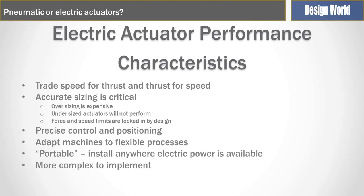Electric actuators provide precise control of positioning and can adapt to flexible processes. Usually in a plant there's an electric outlet anywhere, so if you need to add a facility to a machine, it's relatively easy — you just plug in the electric actuator, install it, and it's ready to go. So to that extent it's portable. It is a little bit more complex to implement than pneumatic because of the control side of the actuator.